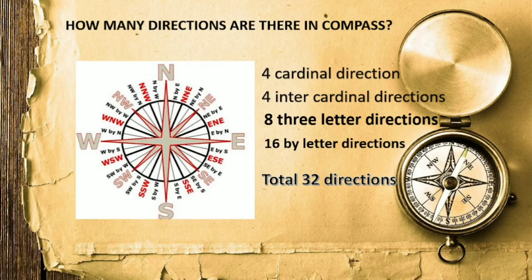In a compass we have 32 directions in total: 4 cardinal directions, 4 intercardinal directions, 8 three-letter directions, and 16 bi-letter directions — making 32 directions total for a compass.